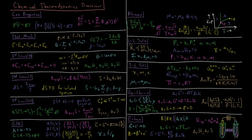We define enthalpy as the internal energy U plus pressure times volume. We can look at various types of enthalpy: that which occurs during phase transitions, enthalpy of formation, and enthalpy of reaction.